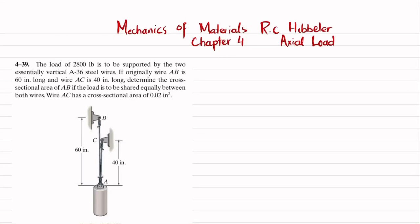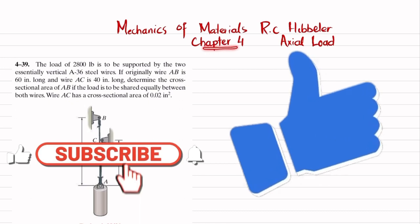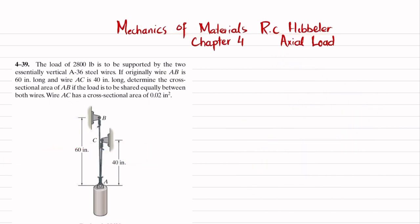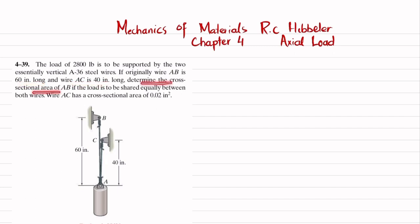Welcome back. In this video we are going to solve problem 4-39, taken from chapter number 4 on axial load. The book is Mechanics of Materials by RC Hibbeler. The problem statement: a load of 2800 pounds is to be supported by two essentially vertical A36 wires. Wire AB is originally 60 inches long and wire AC is 40 inches long. Determine the cross-sectional area of AB if the load is to be shared equally between both wires.